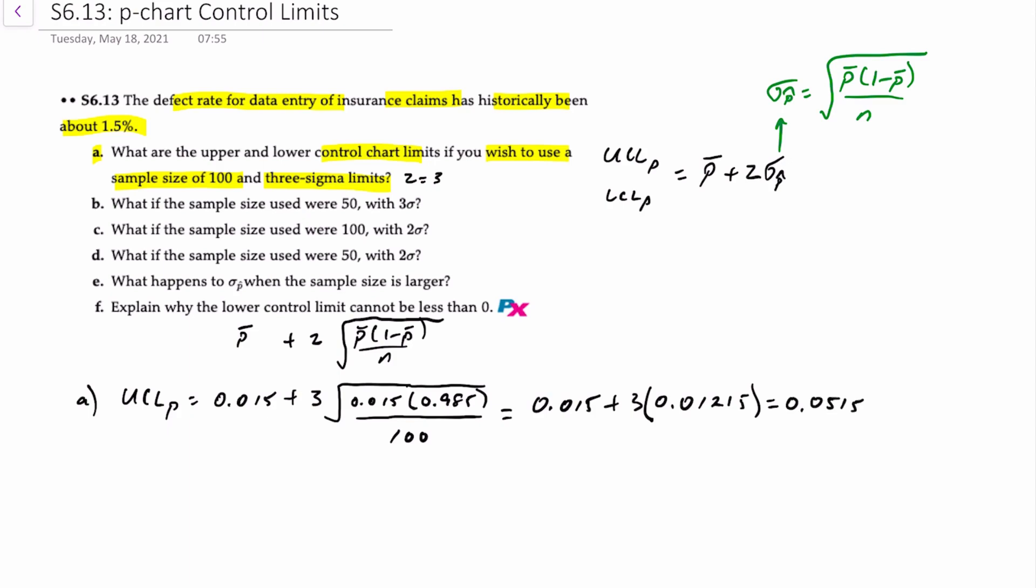We can also make note that for all of our work, that numerator is always going to be the same because we're always working with a defect rate of 1.5%. So 0.015 times 0.985 will always be 0.0148.